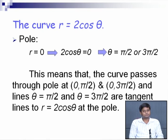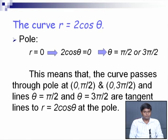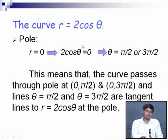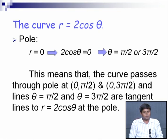For the curve r=2cosθ, checking whether it passes through the pole: putting r=0 gives 2cosθ=0, which means cosθ=0. Solving, θ=π/2 or θ=3π/2. This means the curve passes through the pole at points (0, π/2) and (0, 3π/2). The lines θ=π/2 and θ=3π/2 are tangents to the curve r=2cosθ at the pole.